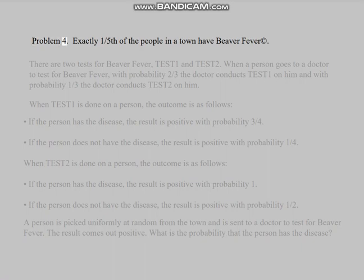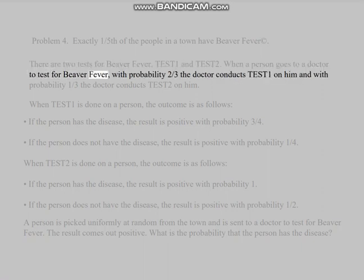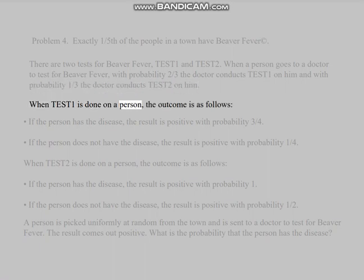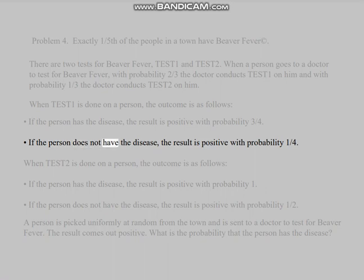Problem 4: Exactly one-fifth of the people in a town have beaver fever. There are two tests for beaver fever, TEST1 and TEST2. When a person goes to a doctor to test for beaver fever, with probability 2/3 the doctor conducts TEST1 on him. When TEST1 is done on a person, the outcome is as follows: If the person has the disease, the result is positive with probability 3/4. If the person does not have the disease, the result is positive with probability 1/4.